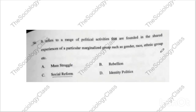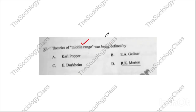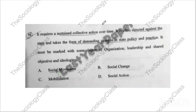Question number fifty-six: 'It refers to a range of political activities founded in the shared experience of particular marginalized groups — gender, race, ethnic, etc.' The correct answer is D — identity politics. We have already discussed this earlier. Question fifty-seven: 'Theories of middle range' — whose is it? The correct answer is D — R.K. Merton.